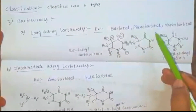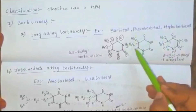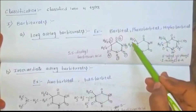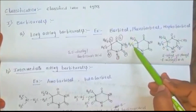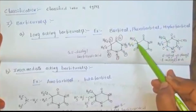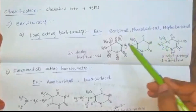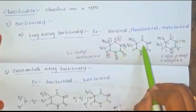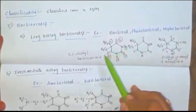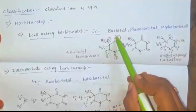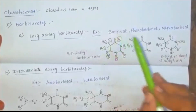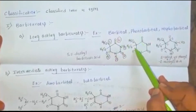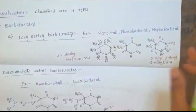Phenobarbital: 'pheno' indicates phenyl group, which is substituted at the fifth position. The difference between barbitol and phenobarbital is C2H5 at the fifth position in barbitol, and a C6H5 (phenyl) group at the fifth position in phenobarbital.